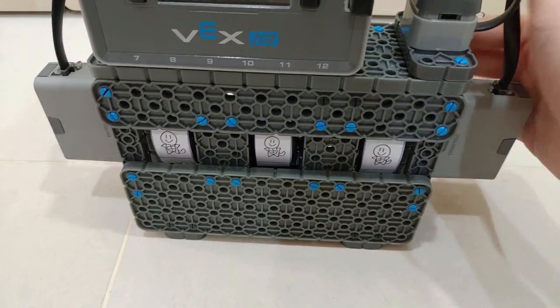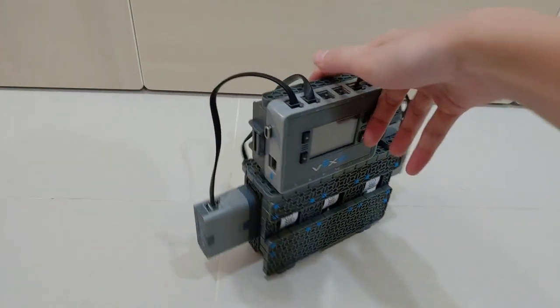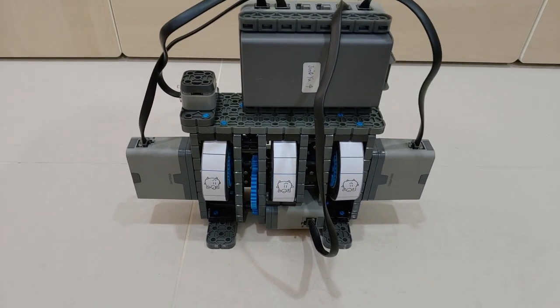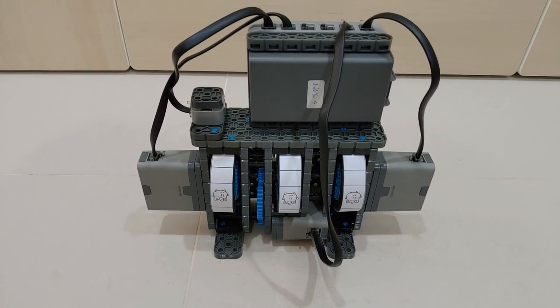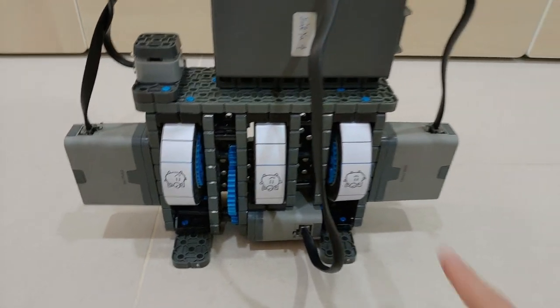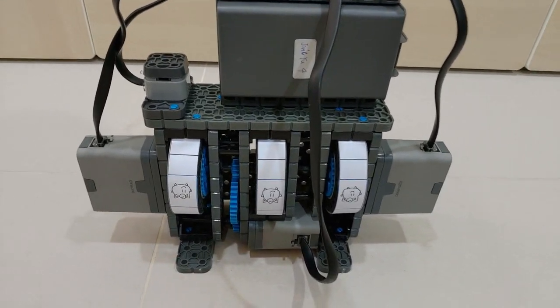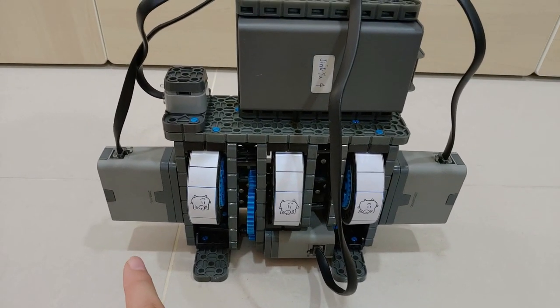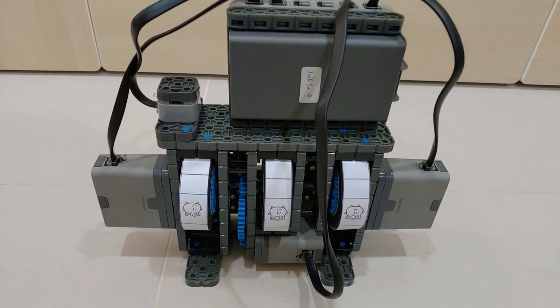At the back, we can see three motors and three wheels. Each motor controls one wheel. As you can see, these two motors are reversed, so when we are coding, we have to reverse this motor so it will all go in the same direction.